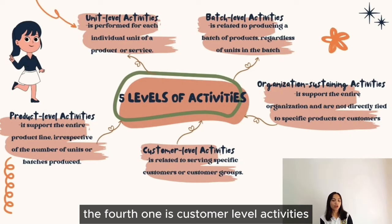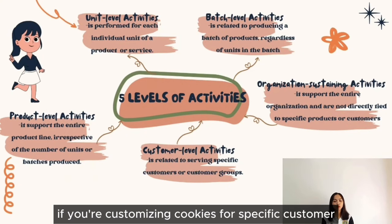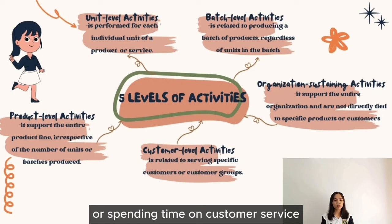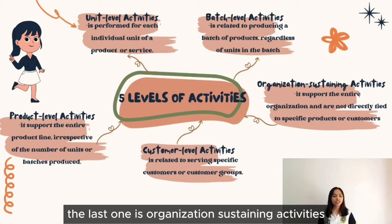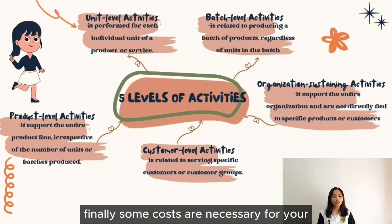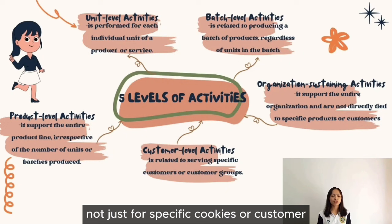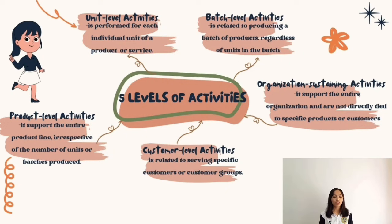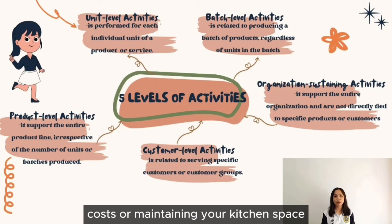The fourth level is customer-level activities. If you are customizing cookies for a specific customer or spending time on customer service, those costs fall into customer-level. The fifth and last is organization-sustaining activities — costs necessary for the entire operation, not just for specific cookies or customers, such as general administrative costs or maintaining your kitchen space.